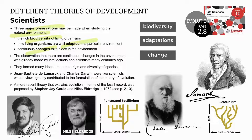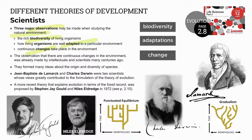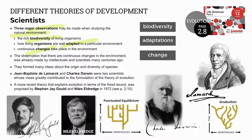We covered Lamarck and his theories in an earlier video. Then we looked at Charles Darwin and his theory of evolution by natural selection, including gradualism. In this video, we focus on the more recent theory of punctuated equilibrium by Stephen Jay Gould and Niles Eldridge, who worked together to explain the sudden appearances of species in the fossil record.